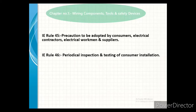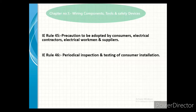Our next rule is Indian Electricity Rules 46, periodical inspection and testing of consumer installation. This rule tells us that where an installation is already connected to the supply system of the supplier, every such installation shall be periodically inspected and tested at intervals not exceeding 5 years. Before or during installation, if any problem is found, it must be identified and resolved. The inspection interval shall not exceed 5 years.